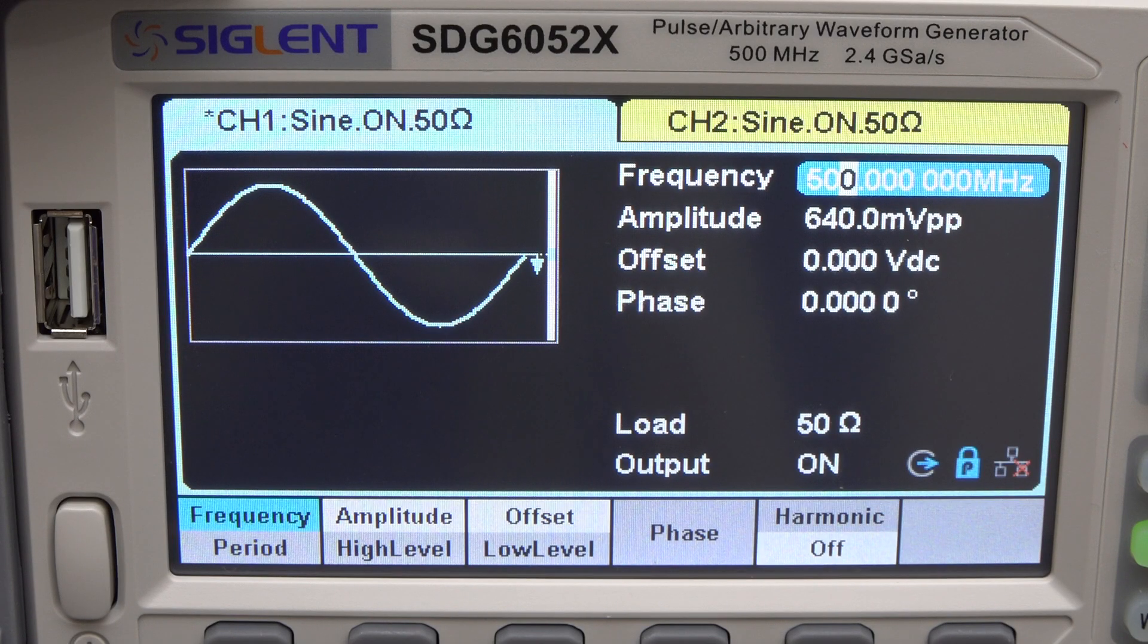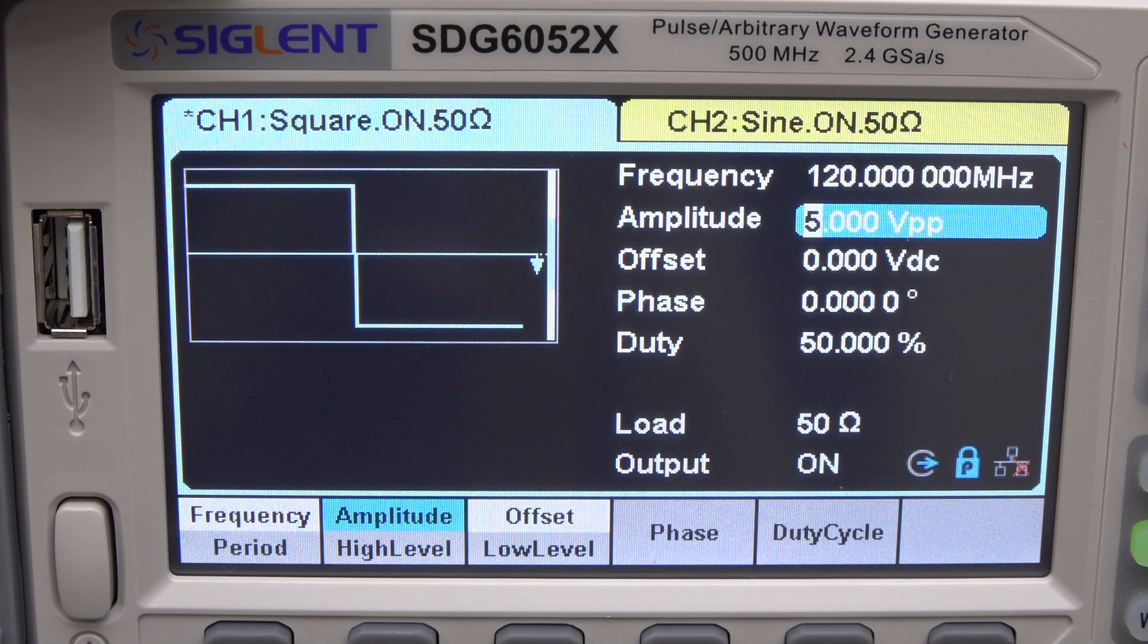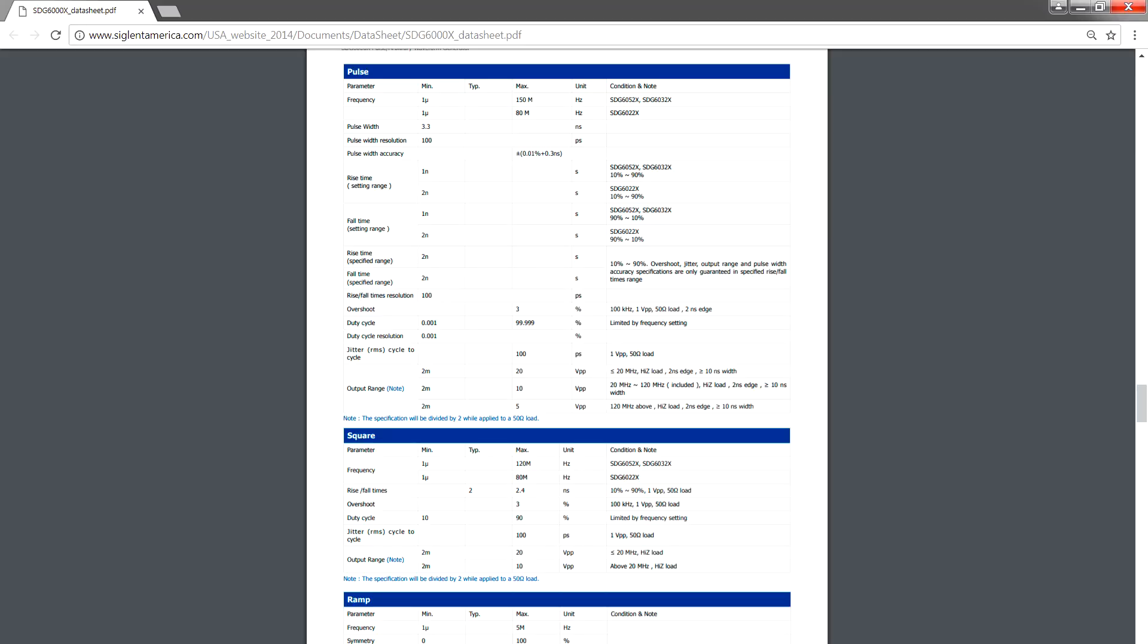Okay, let's start evaluating the performance of the unit. The first thing to highlight is that although this is marketed as a 500MHz wave generator, this only refers to the sine wave capabilities of the unit. It can do 500MHz sine waves, but the square wave capabilities top out at 120MHz. This is a common thing for manufacturers to do nowadays, and if you want to know what it can do with other waveforms you have to dig into the datasheet.